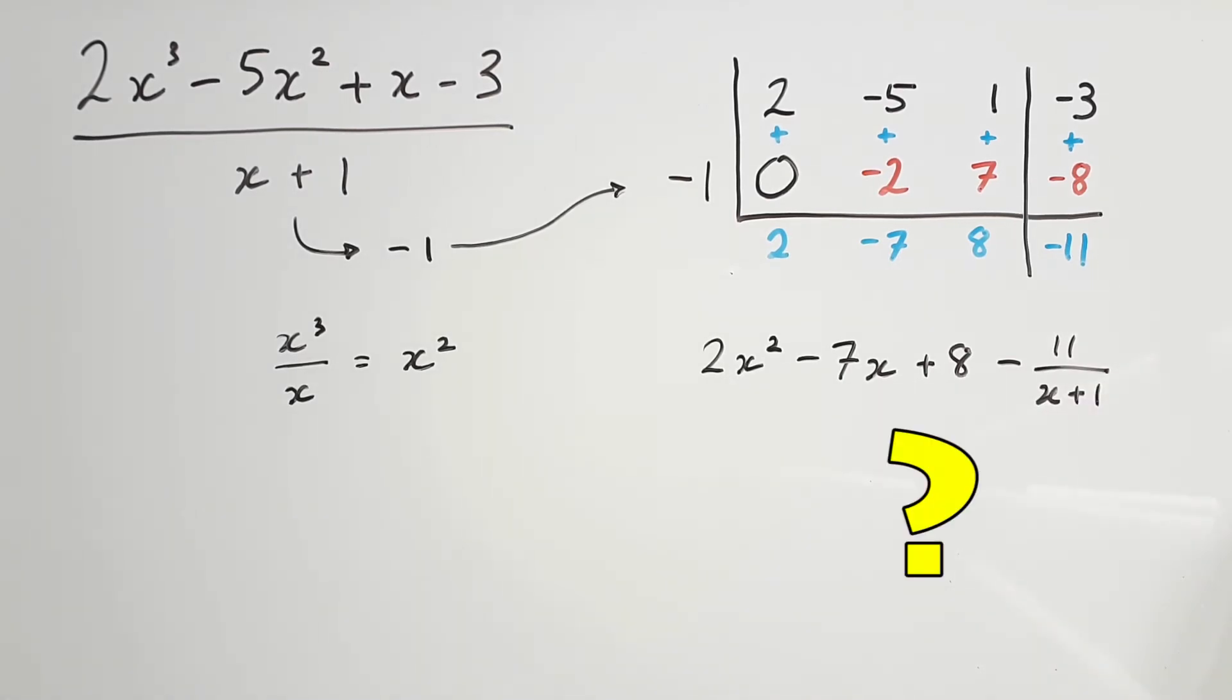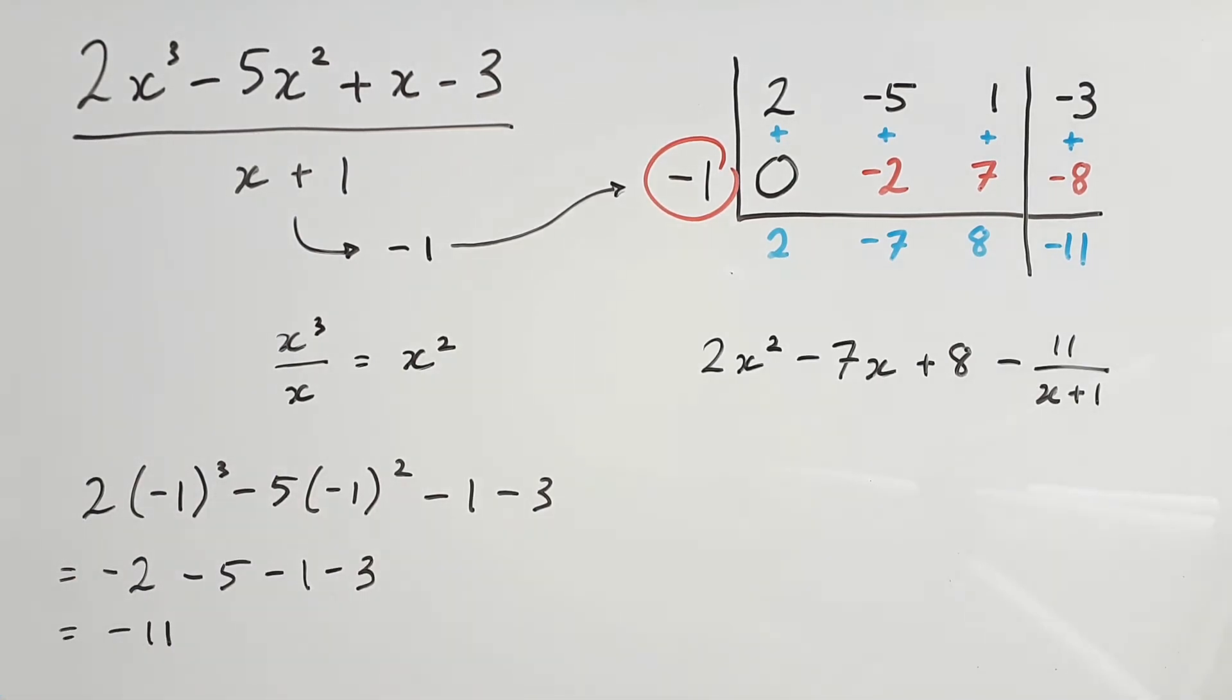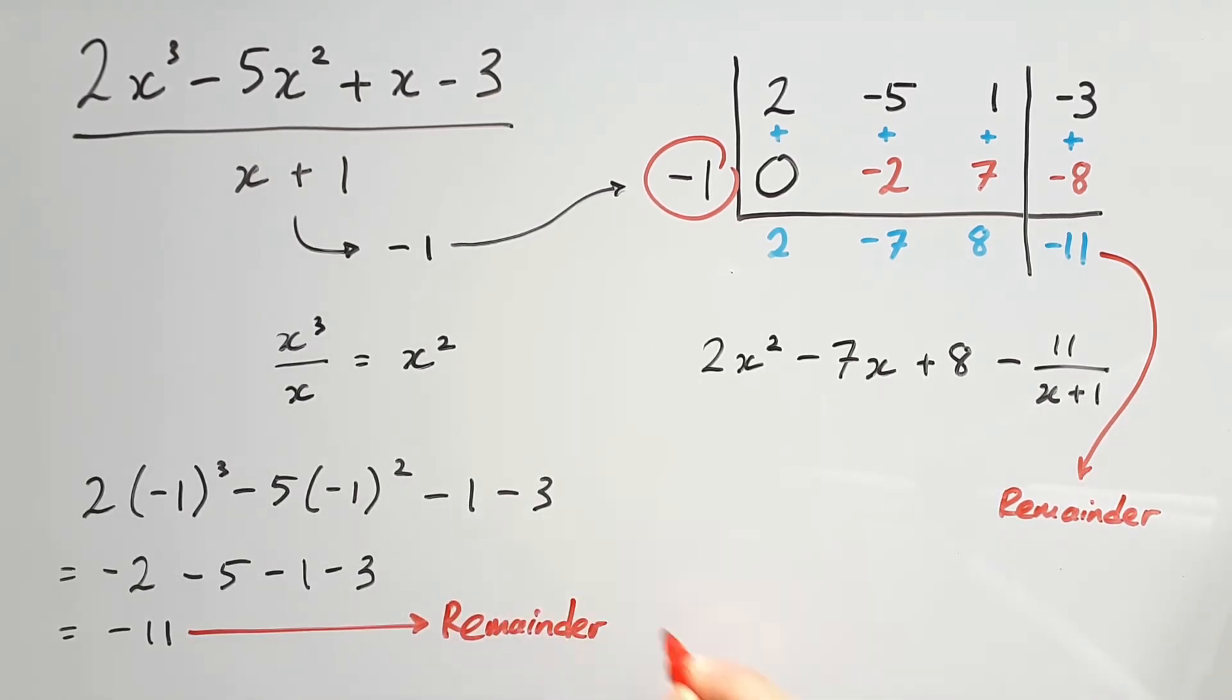But how do we know this is correct? We can find out by subbing negative 1 into the cubic. Doing so gives us negative 11. This is our remainder from the division. And it's not a coincidence that this value is down here as well. When they match, there's a really good chance that you did this correctly. It's pretty tough to get this right by accident.